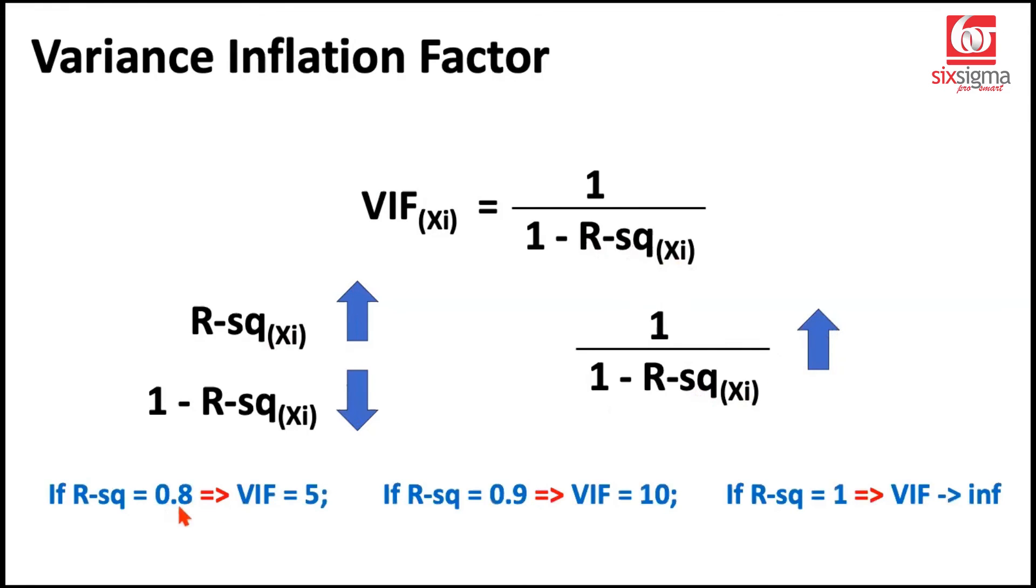To give you an example, if R-squared value was 0.8, you can try putting 0.8 here. You'll get 1 - 0.8, which is 0.2. And 0.2 would give you VIF of 5. 1 over 0.2 is 5. Likewise, if R-squared value was 0.9, which is a greater value compared to the previous value, you can see 1 - 0.9 will give you 0.1. And 1 over 0.1 is going to give you VIF of 10. So as we increase the R-squared value, the VIF also increases. An extreme case could be that your R-squared value is 100% or 1. And if you do 1 over (1 - 1), 1 - 1 is going to be 0, then VIF tends to infinity.